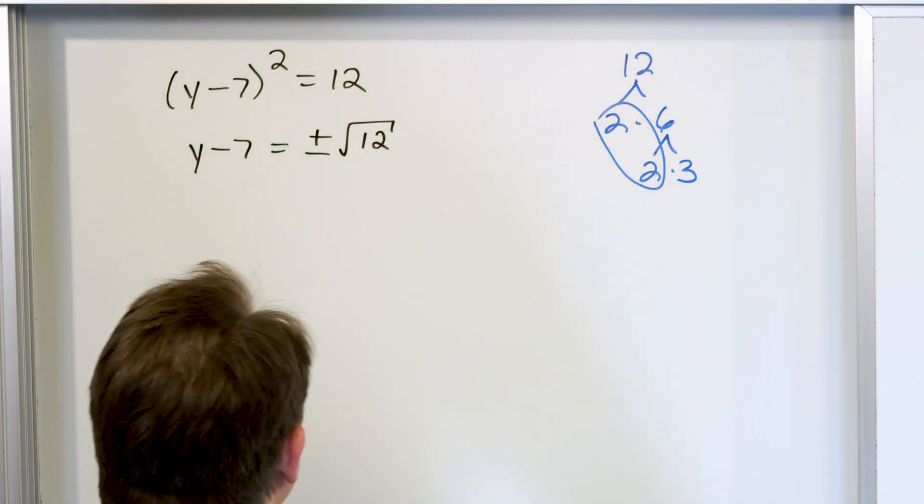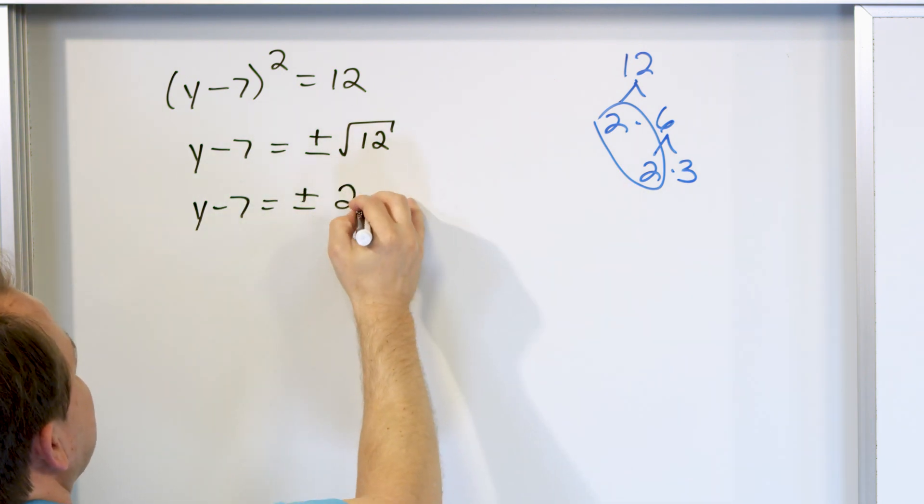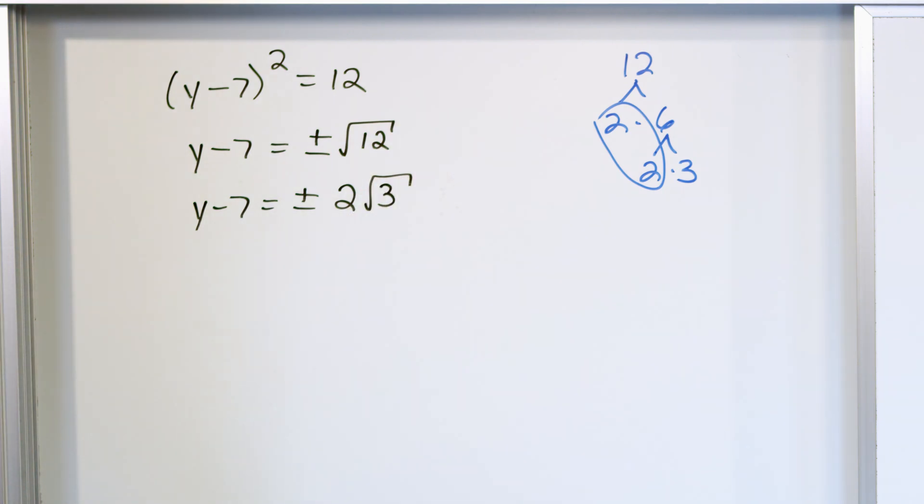And so then I can rewrite the square root of 12 as y minus 7 equals plus or minus, single 2 comes out, square root of what's left over, which is a 3. And then to find out what y is equal to, we move the 7 over by addition. So it's going to be positive 7 plus or minus 2 times the square root of 3.